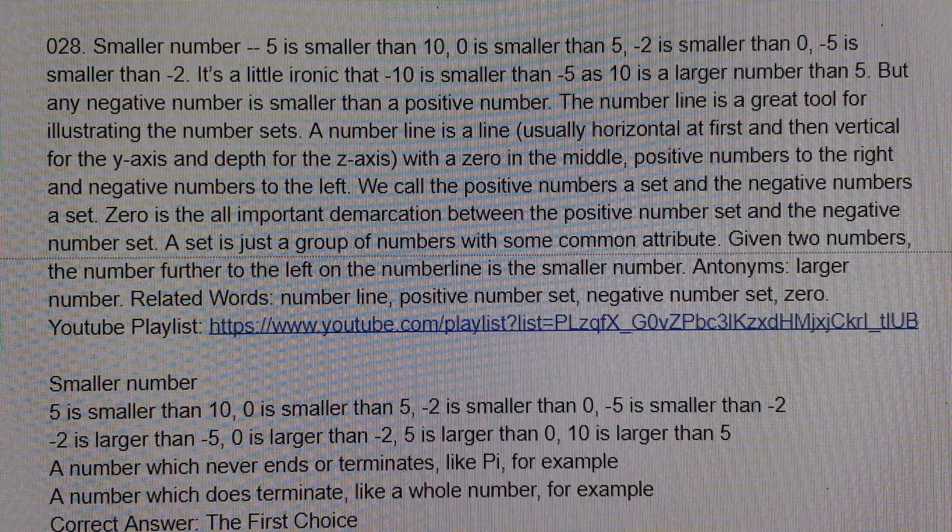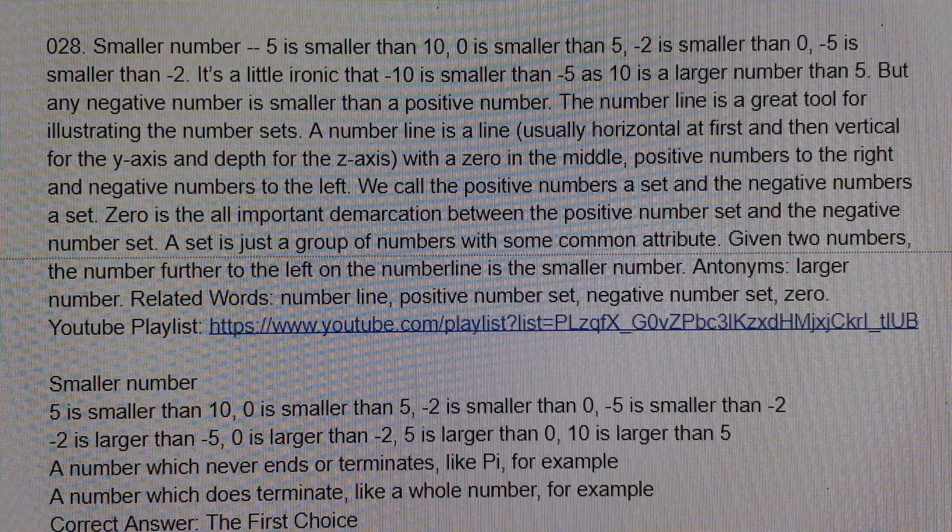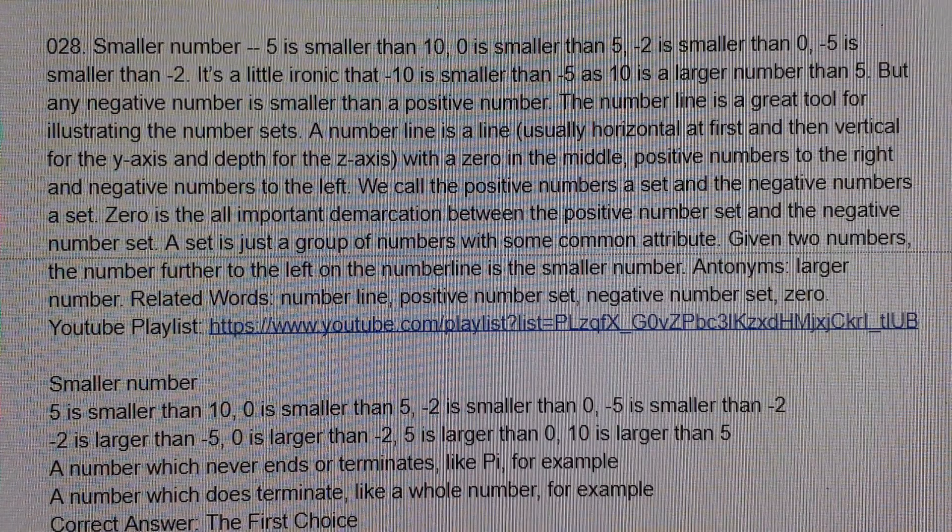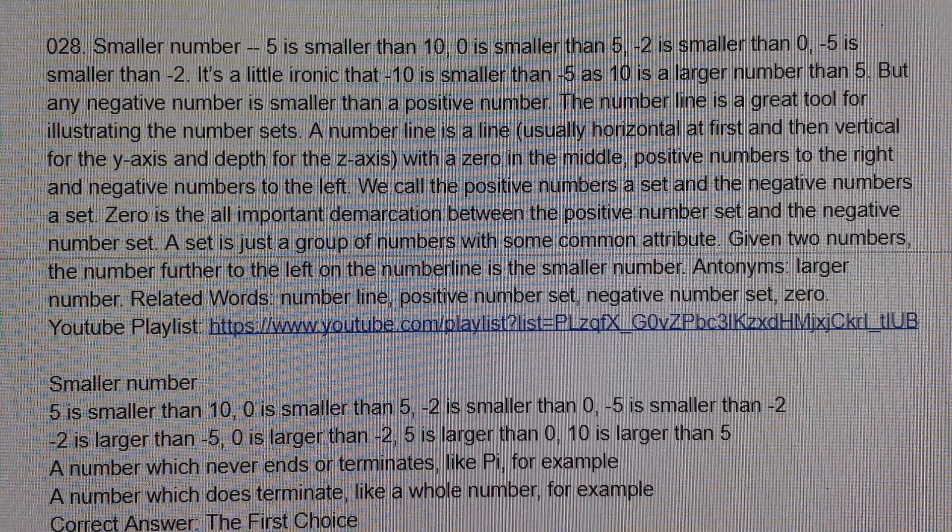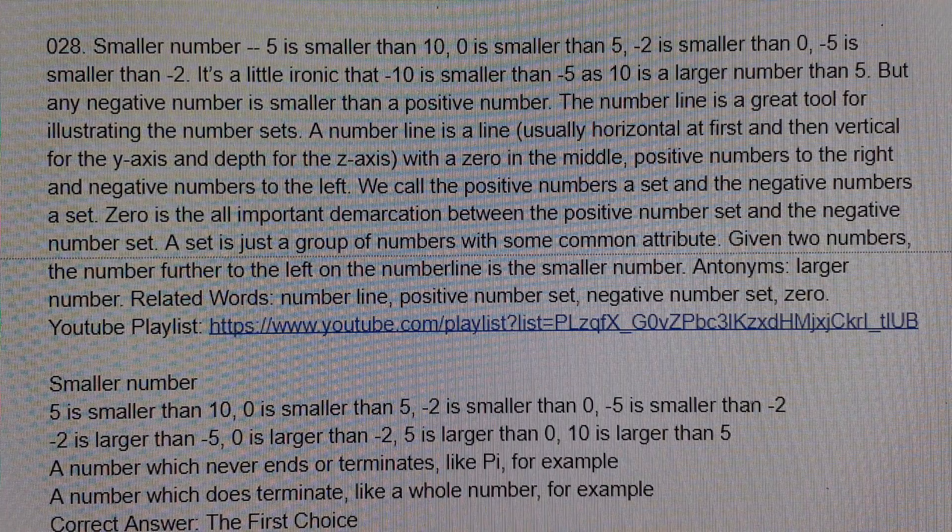Smaller number. 5 is smaller than 10. 0 is smaller than 5. Negative 2 is smaller than 0. Negative 5 is smaller than negative 2.